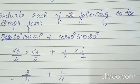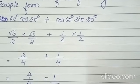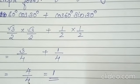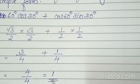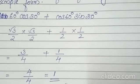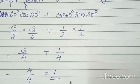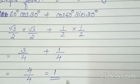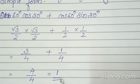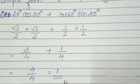Since the denominators are the same, we can add the numerators directly. So 3 plus 1 equals 4. The denominator is 4. So 4 by 4 equals 1. This is the answer for sine 60 degree cos 30 degree plus cos 60 degree sin 30 degree.